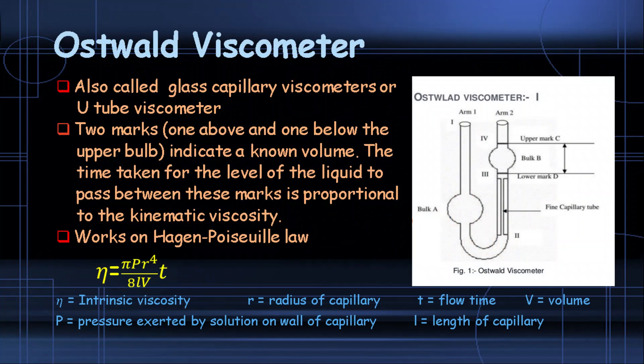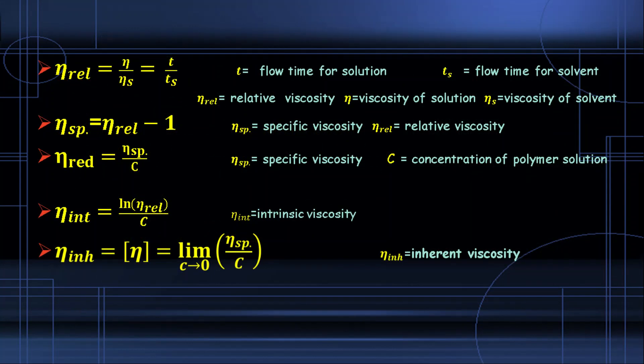The Oswald viscometer is an instrument used to calculate viscosity. It has two marks — an upper mark and a lower mark — where liquid is filled. The liquid flows and the total time taken for the liquid to pass from the upper mark to the lower mark is used to calculate the viscosity. Related terms such as relative viscosity and specific viscosity are important formulas that can be asked in exams.